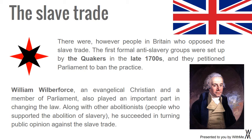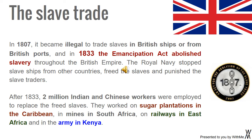There were however people in Britain who opposed the slave trade. The first formal anti-slavery groups were set up by the Quakers in the late 1700s, and they petitioned Parliament to ban the practice. William Wilberforce, an evangelical Christian and a member of Parliament, also played an important part in changing the law. Along with other abolitionists — people who supported the abolition of slavery — he succeeded in turning public opinion against the slave trade. In 1807, it became illegal to trade slaves in British ships or from British ports, and in 1833 the Emancipation Act abolished slavery throughout the British Empire.